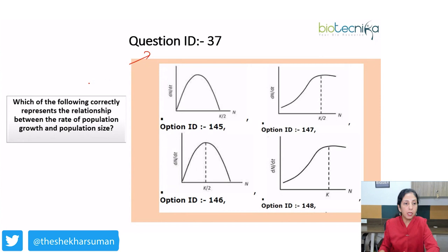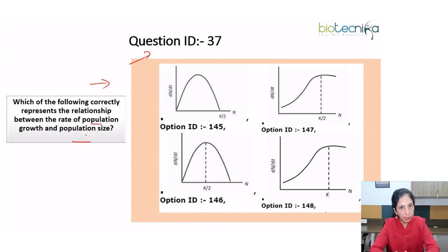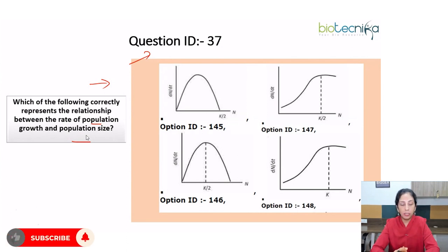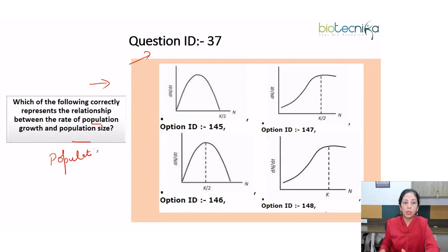Now let us move to question ID number 37. This is a graph-based question. It asks: which of the following correctly represents the relationship between the rate of population growth and population size? This question has been taken from population ecology and is based on population growth models.